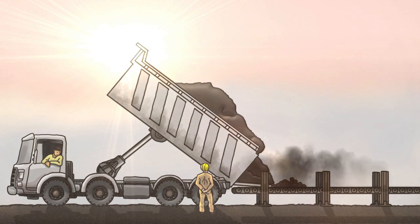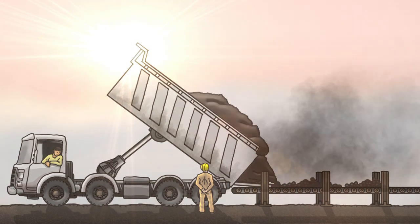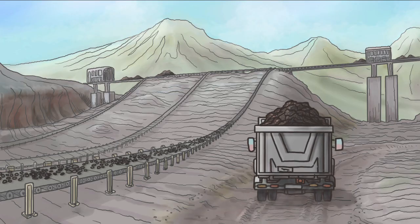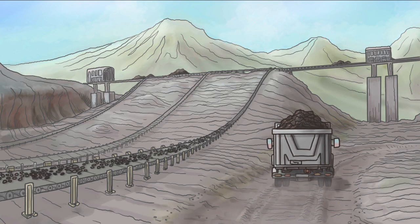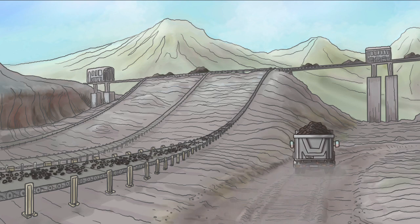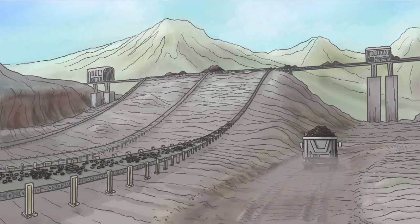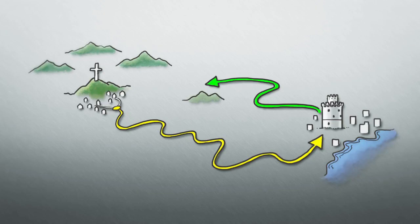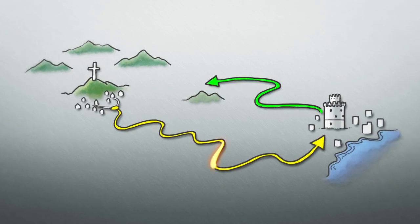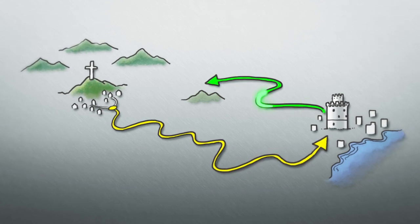After lignite is mined, it is taken to the electricity-generating power plants on conveyor belts. In all of western Macedonia, there are 270 km of conveyor belts. This is one and a half times the distance from Florina to Thessaloniki.